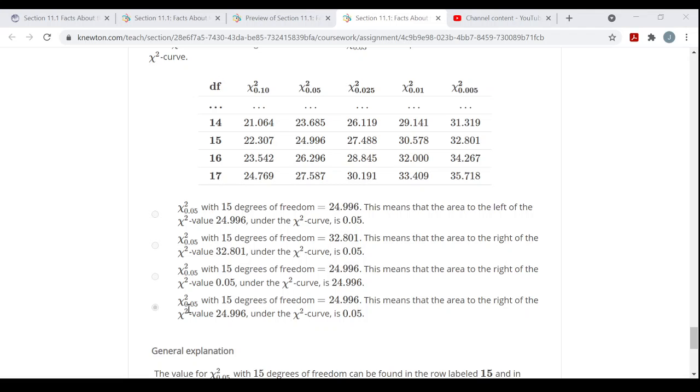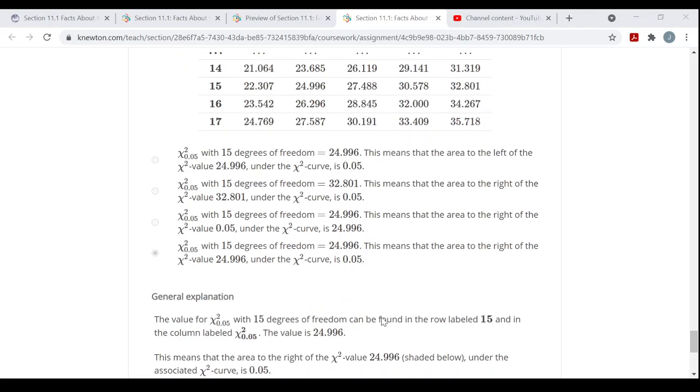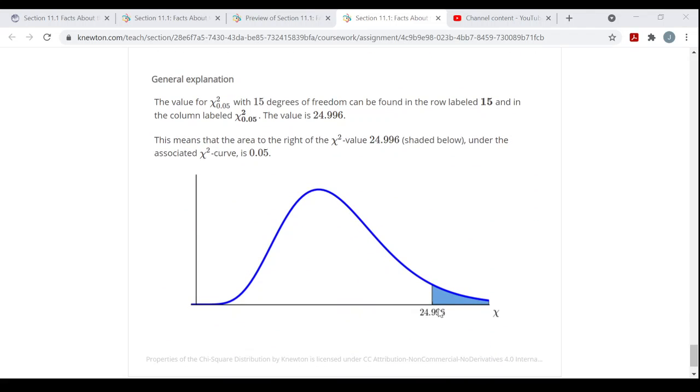They say interpret this. The correct answer is this bottom choice: chi-square with the 0.05 subscript with 15 degrees of freedom is 24.996. This means that the area to the right of the chi-square value 24.996 under the chi-square curve is five percent. Exactly what I was drawing for you a second ago. And you have your answer explanations that are drawn the same picture I drew on paper.